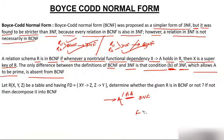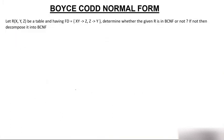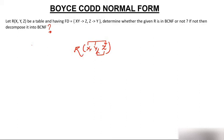Let's solve a question. Given a table R with attributes X, Y, Z and functional dependencies XY → Z and Z → Y, determine whether R is in BCNF. If not, decompose it into BCNF.